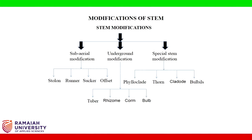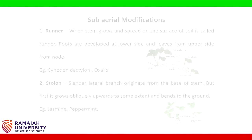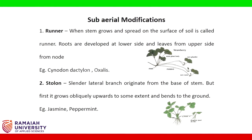Underground modification is classified into tuber, rhizome, corm, and bulb. Special stem modification is classified into phylloclade, thorn, cladode, and bulbil.